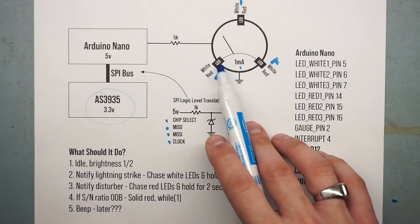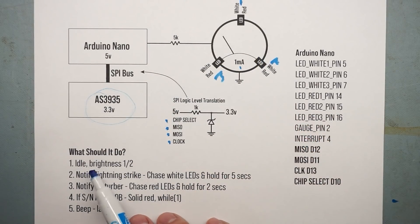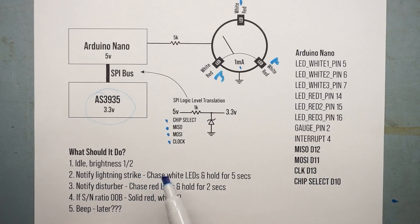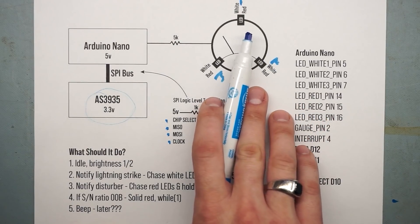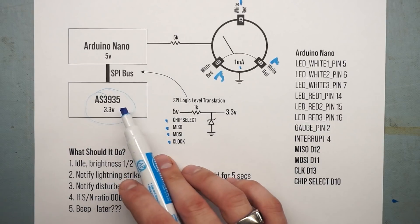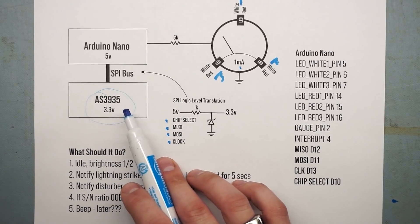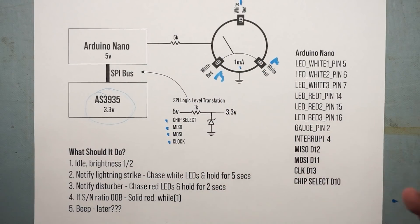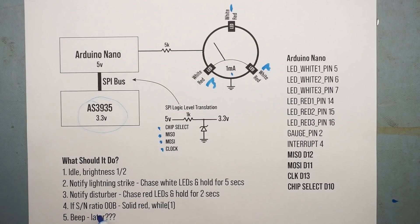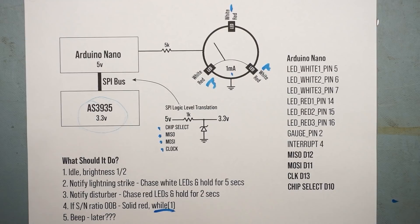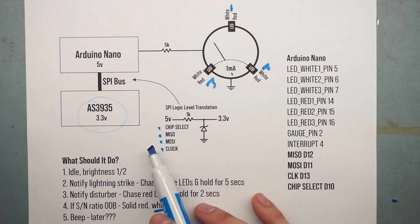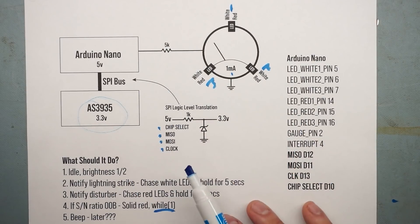At idle, the LEDs are PWM-controlled from 0 to 255, at half brightness — 128 on the white LEDs. If there is a notification of a lightning strike from the chip, we chase the white LEDs for a second, spin them around, then hold for 5 seconds with the gauge deflected. If there's a disturber — man-made noise that are false triggers — the LEDs chase red and we hold for 2 seconds, just so we know during debugging what's going on. If the signal-to-noise ratio is too high, we go solid red with all three LEDs, do a while-one loop, and hold — that means there's a serious problem and we need to reset. I may add a beeper in the future, but I have to wait until next storm season to set all the parameters and tweak everything, because there's a lot of background noise in the household environment.